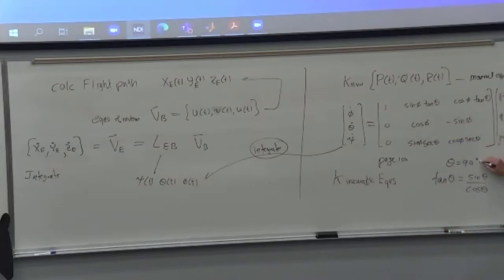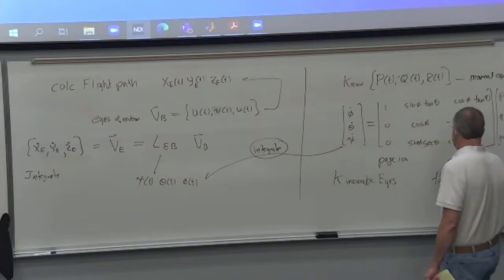When theta is 90 degrees, that cosine goes to zero, so that tangent becomes infinite. So that's a mathematical sign that you get gimbal lock. And the same thing happens to secant.